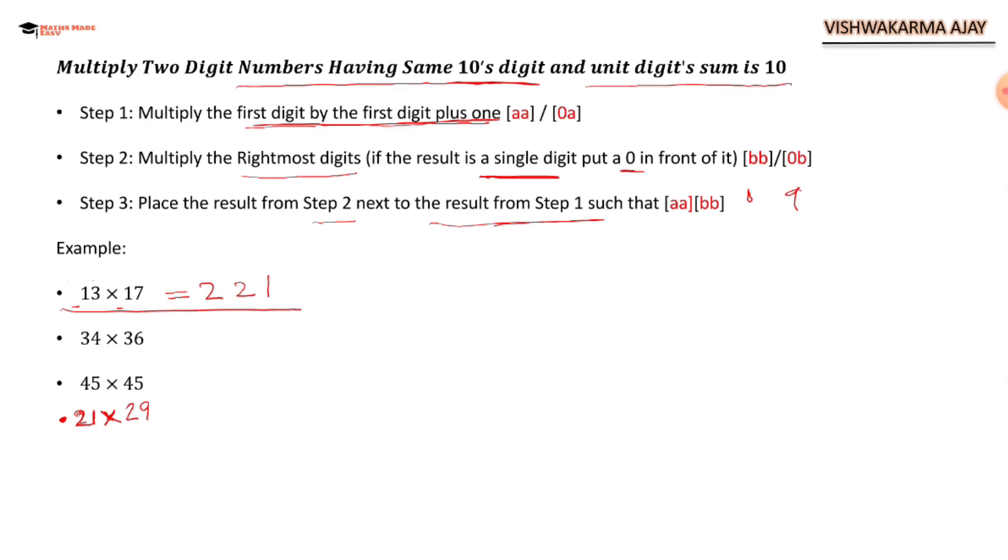Next, 34 times 36. We have to multiply 3 with 3 plus 1, that is 4. 3 times 4 is 12. 6 times 4 is 24. That's it.